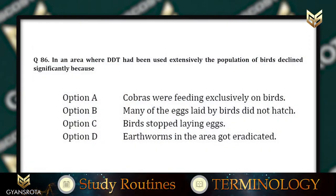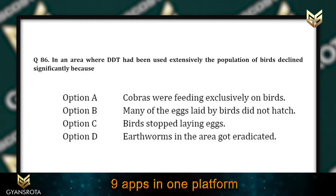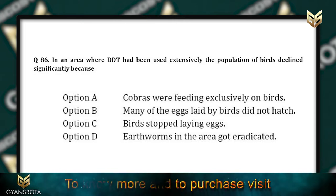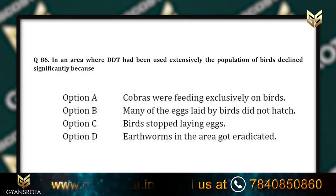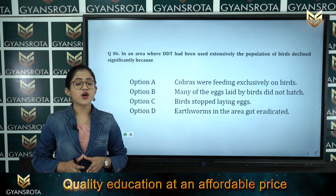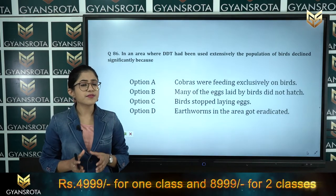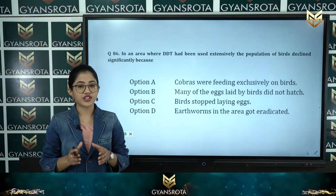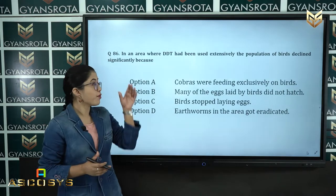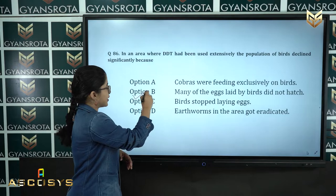Question number 86: In an area where DDT had been used extensively, the populations of birds declined significantly. Option A: cobras were feeding exclusively on birds. Option B: many of the eggs laid by birds did not hatch. Option C: birds stopped laying eggs. Option D: earthworms in the area got eradicated. High concentration of DDT disturbs calcium metabolism in birds, thinning the eggshells and causing premature breakdown of eggs, declining bird populations. So option B is correct.